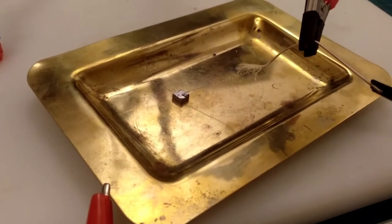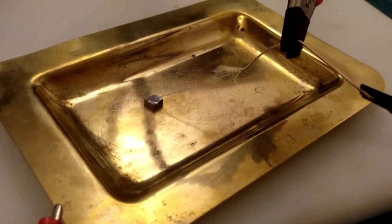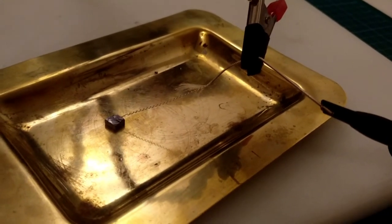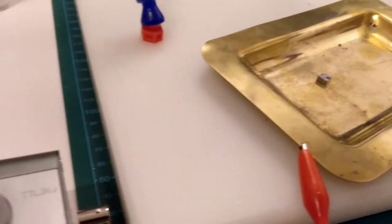This is a Galena crystal resting flat on a brass ashtray. The cat's whisker is made from a D-string from a guitar.